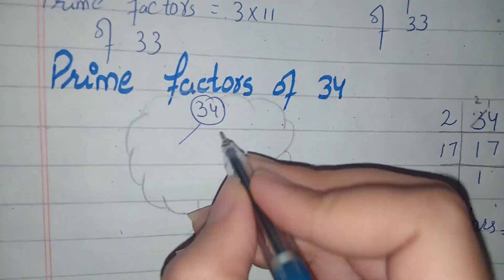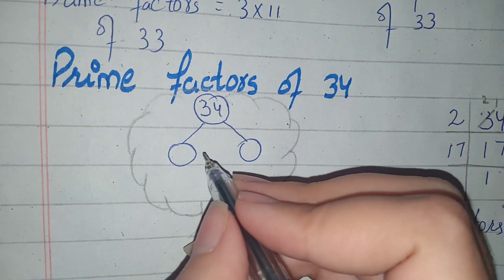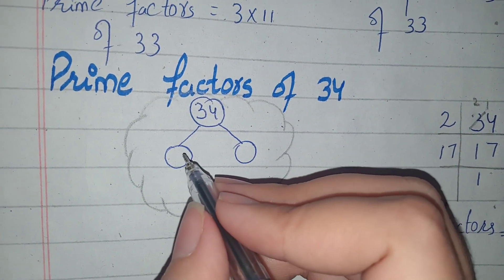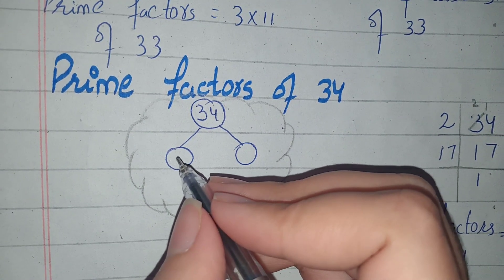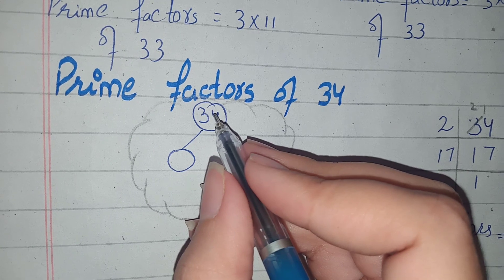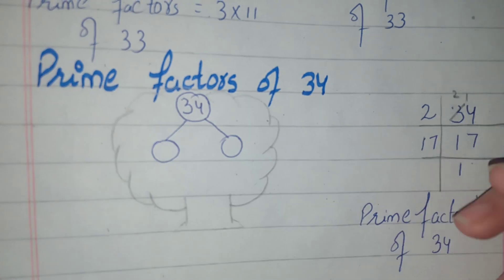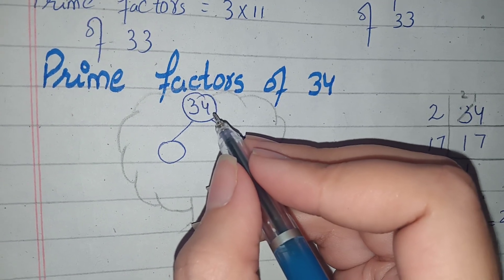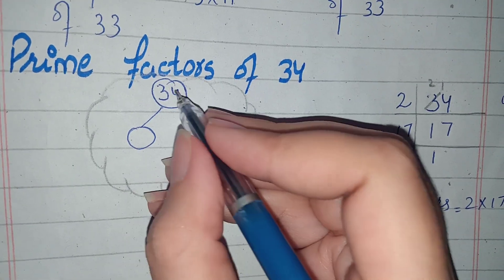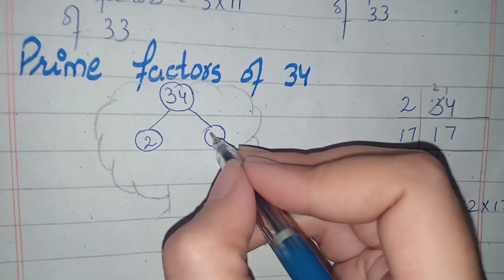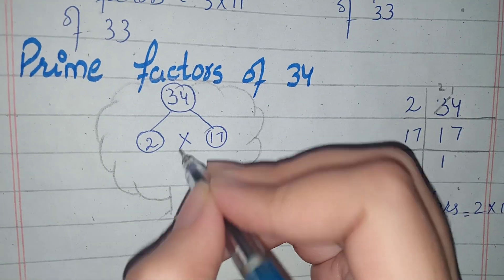Now how do we separate it? If we separate it, we write a small number here. For example, if we start to separate it, this is the rule we have. The rule starts with 2. We take 2, and the table shows 34. How many times? 17 times. So the big number is 17, and the center is multiplied.